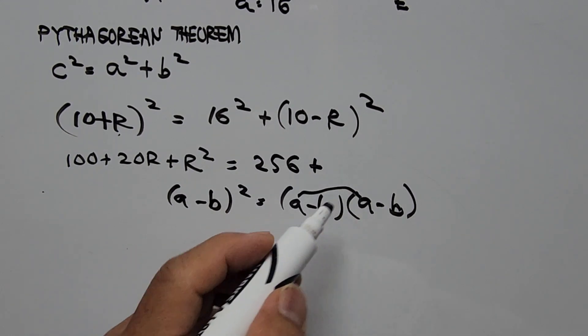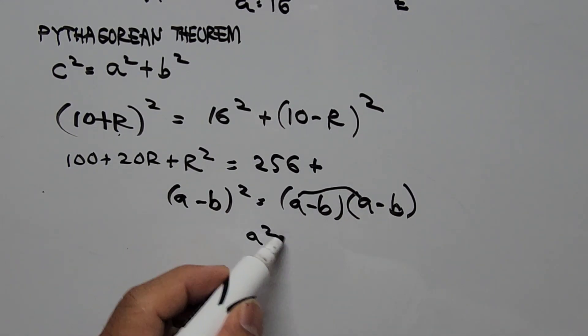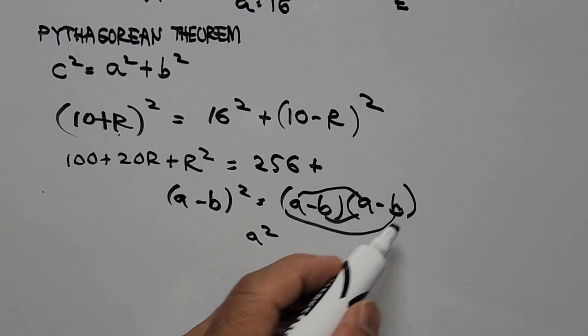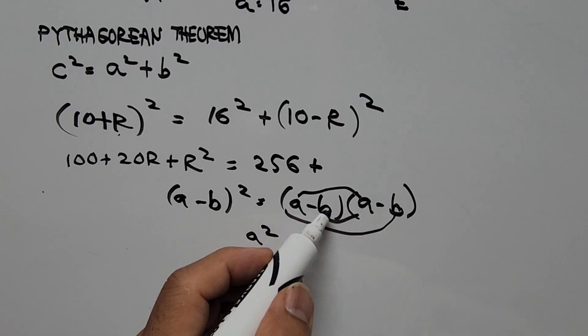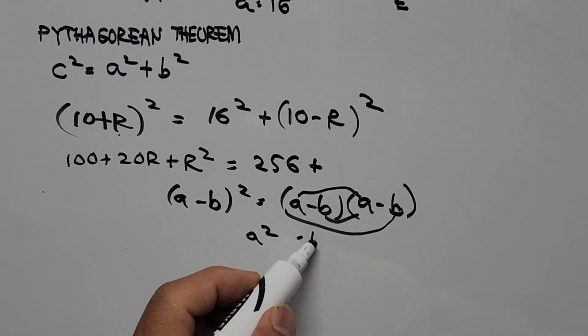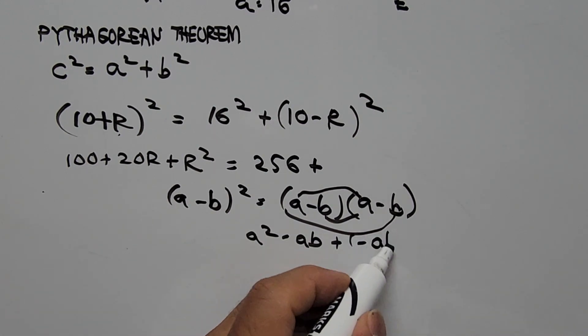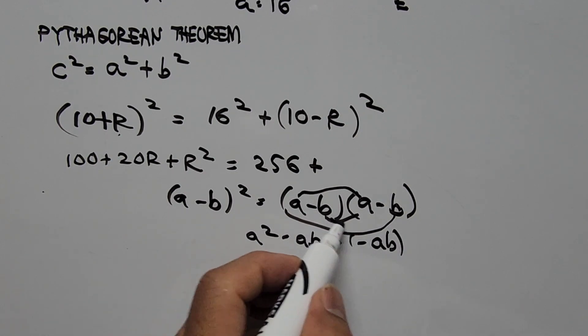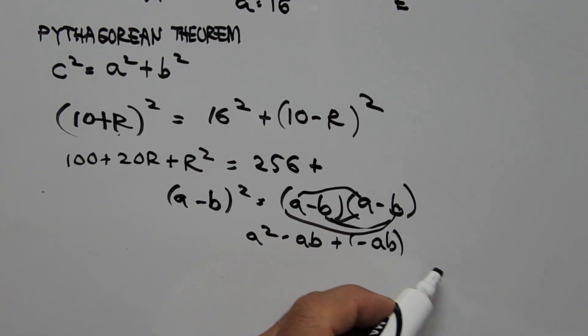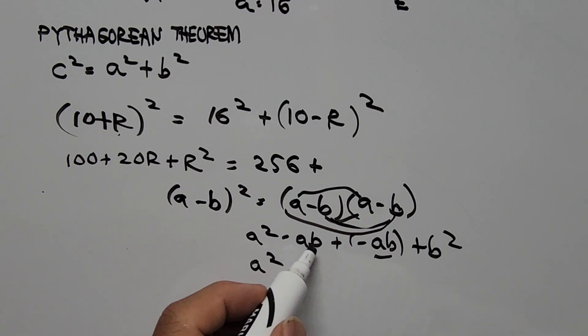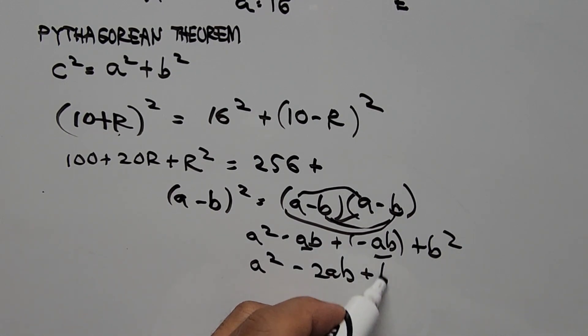So by doing FOIL on here, we have A squared plus the sum of the product of these terms, AB, that's negative AB, negative AB, and then plus negative AB again, and then plus B squared. So we have here A squared, we have minus AB minus AB, so minus 2AB plus B squared.